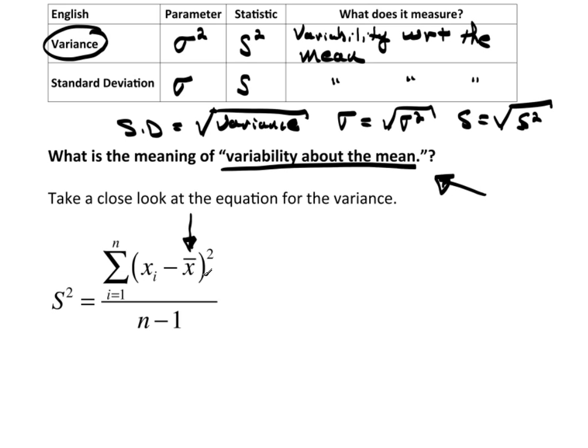Now, this is a sample variance, and look what we're doing here. We're taking the Xis, which are the individual data point. Every individual data point, we're subtracting from it the mean. So this is going to be a distance. It's going to be the distance from the mean. Now, it's important that we square it here, because we said before we looked at this idea.